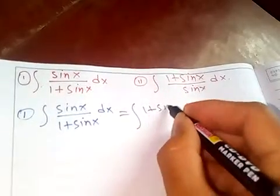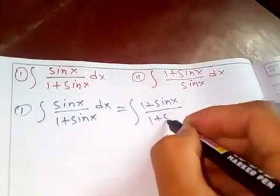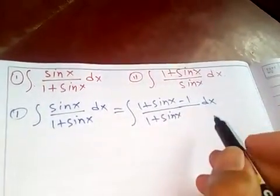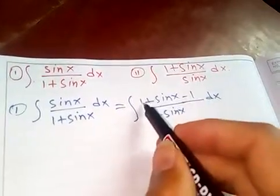(1 + sin(x)) over (1 + sin(x)) minus 1. Am I right? Because plus one and minus one will cancel out, so you will get back the equation.